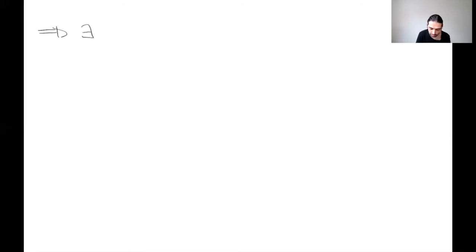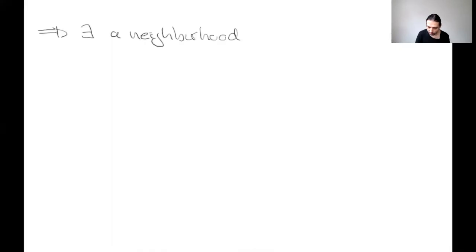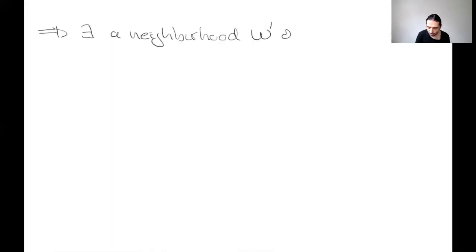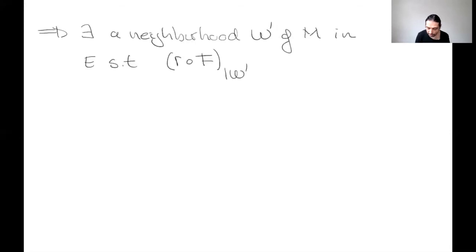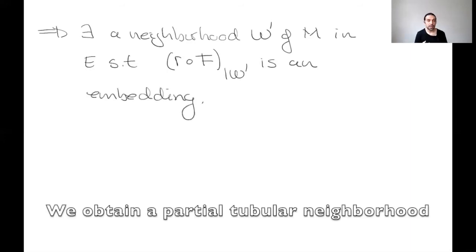So what we get is that there exists a neighborhood W' of the zero section in E such that the restriction of this composition to W' is an embedding. So we have a partial tubular neighborhood as we wanted to prove.